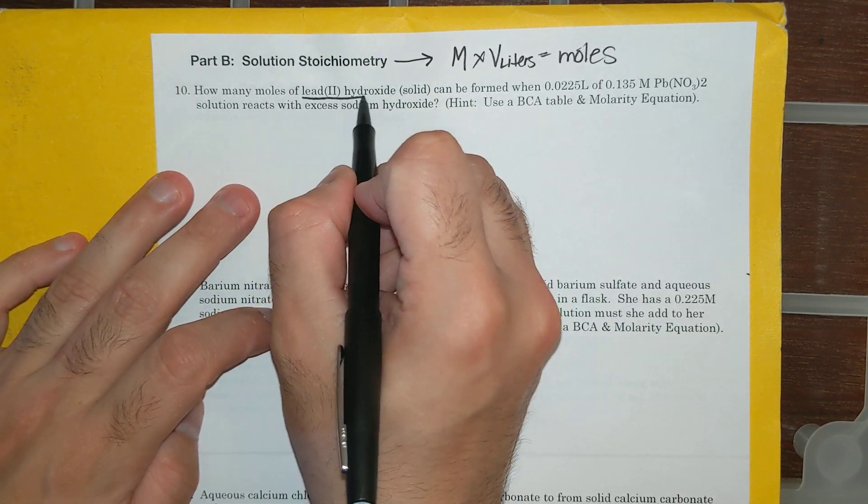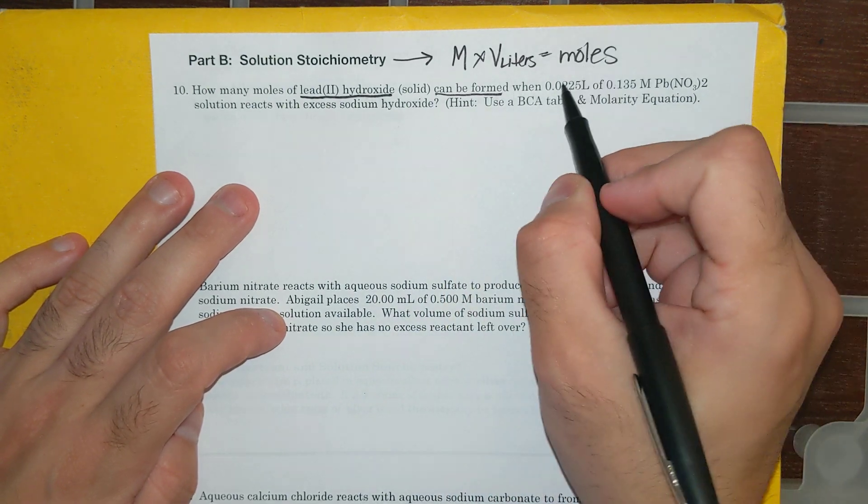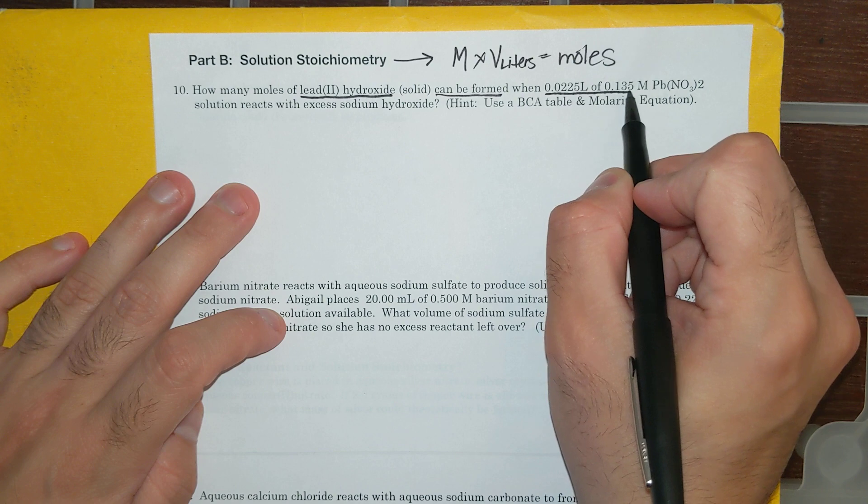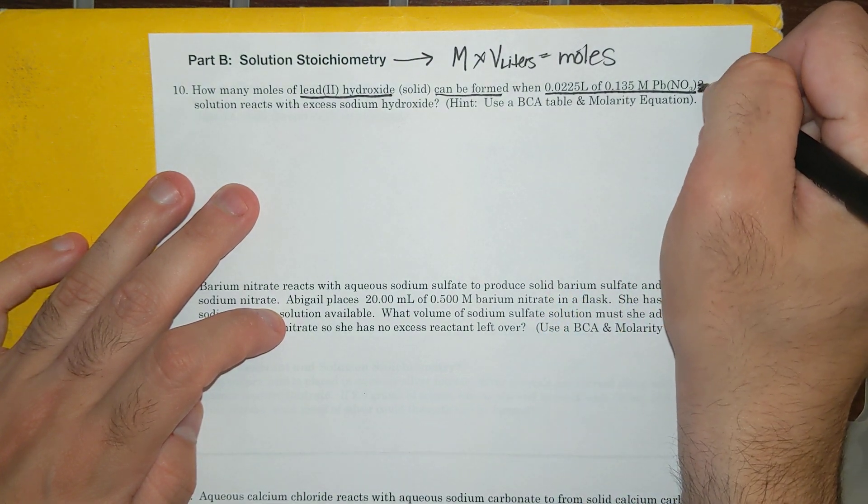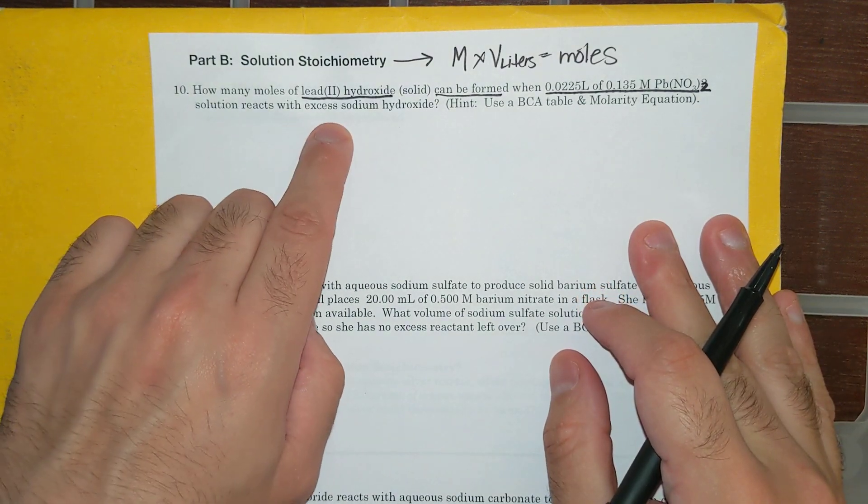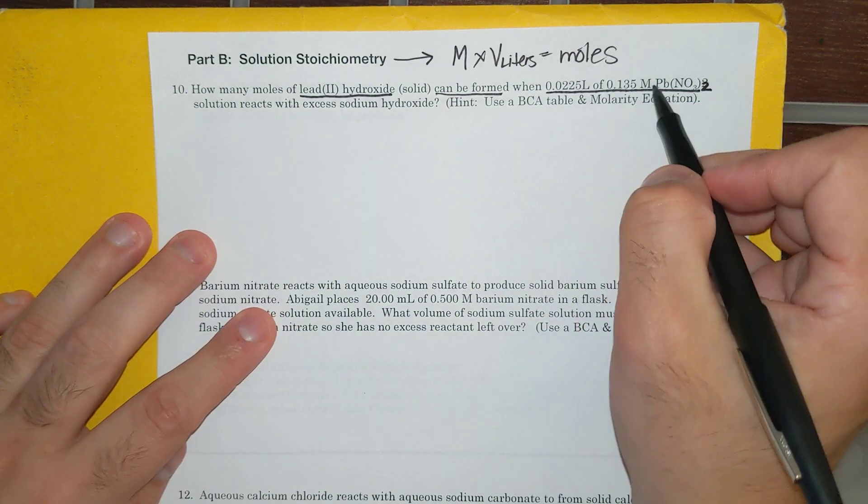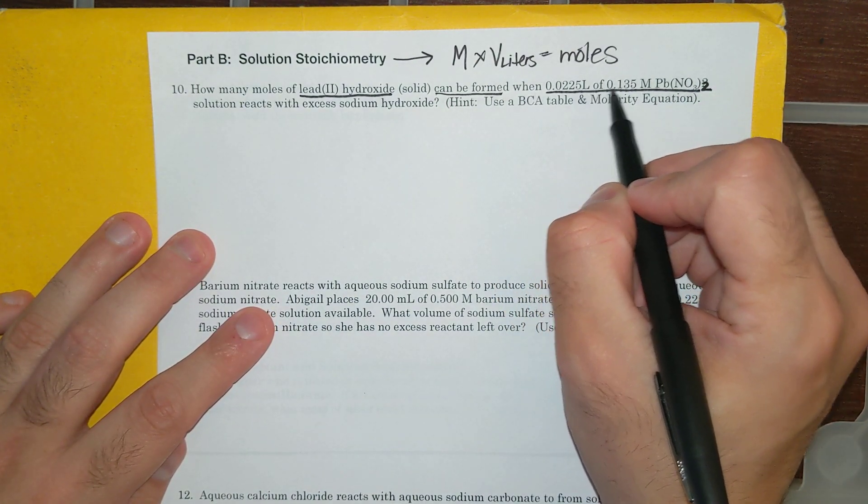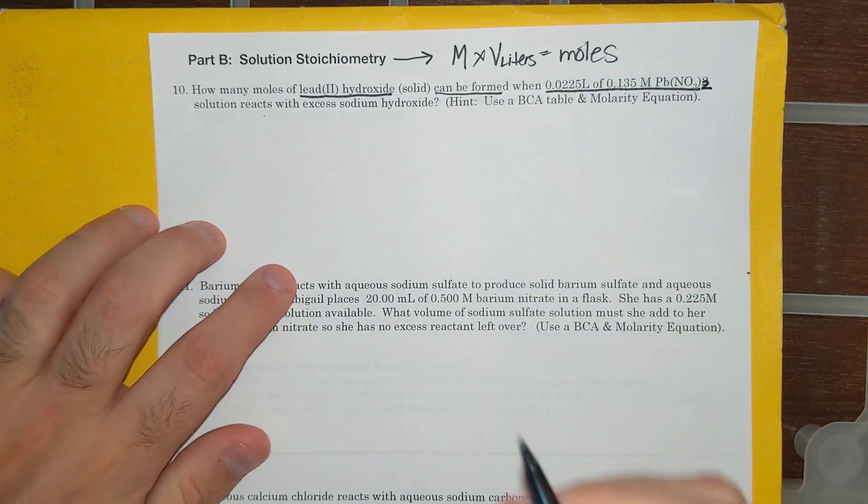It says how many moles of lead-to-hydroxide solid can be formed, that means it's a product, when 0.0225 liters of 0.135 molar lead nitrate, and by the way that should be a little 2, sorry, not a big 2, solution reacts with excess sodium hydroxide. Alright, so I have my reactants.